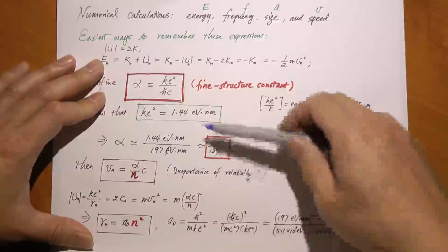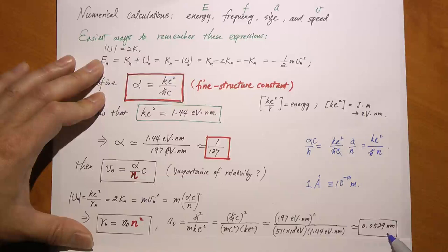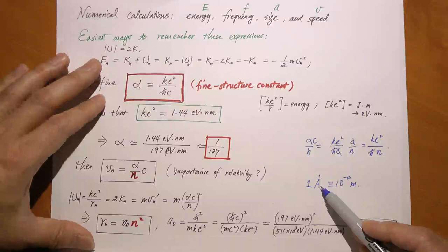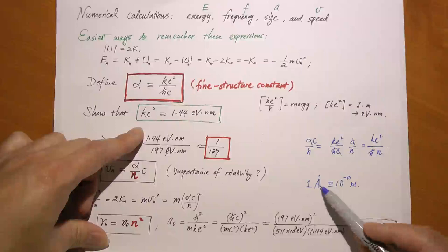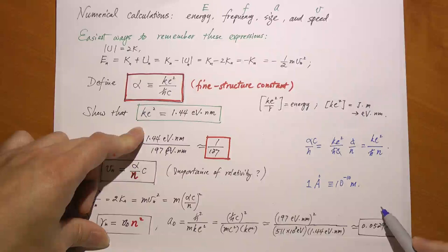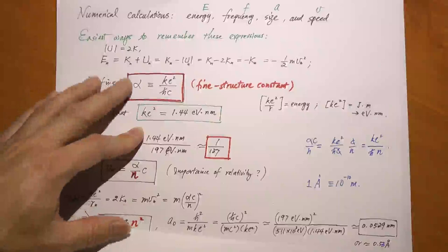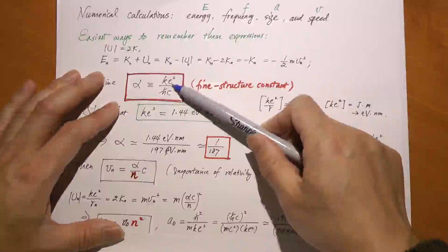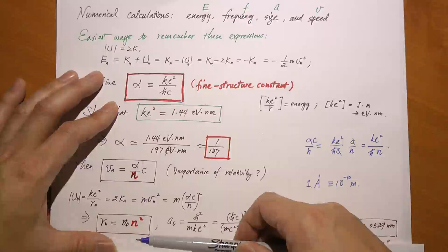Plugging in: (197 eV·nm)² divided by (511 keV) divided by (1.44 eV·nm), the answer is 0.0529 nanometers, or equivalently 0.53 Ångströms. An Ångström is 10⁻¹⁰ meters, while a nanometer is 10⁻⁹ meters. So the radius of the first Bohr orbital is about half an Ångström, meaning the diameter of the hydrogen atom in the ground state is roughly 1 Ångström—about one tenth of a nanometer. It's a simple thing to remember.